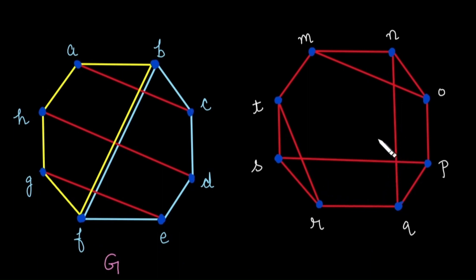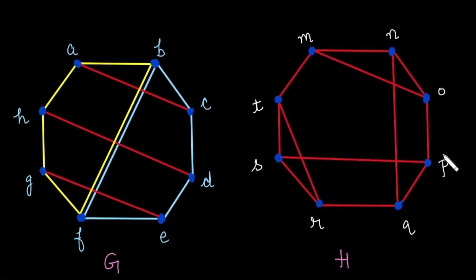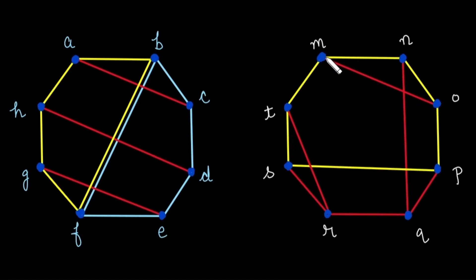Now, where is a simple circuit of length 5 in graph H? Checking one path: S-T, T-M, M-N, N-O, O-P, P-S — counting the edges gives 6, so this is a simple circuit of length 6, not 5. Trying another path: T-M, M-O, O-P, P-Q, Q-R, R-T — counting the edges again gives 6. That is also a simple circuit of length 6. But we need a simple circuit of length 5.